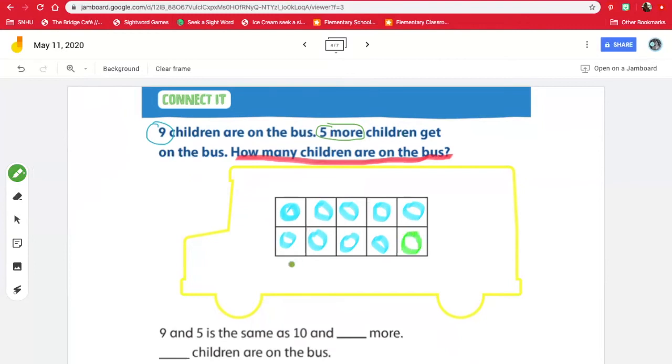Now we need five more. So I'm going to fill up this 10 frame. So one, and let's write the rest below the 10 frame. Two, three, four, five. So I see that we have right here, we have one full 10 frame. So that means there's 10. And how many left over? Four. There are four left over. So nine and five is the same as 10 and four more.